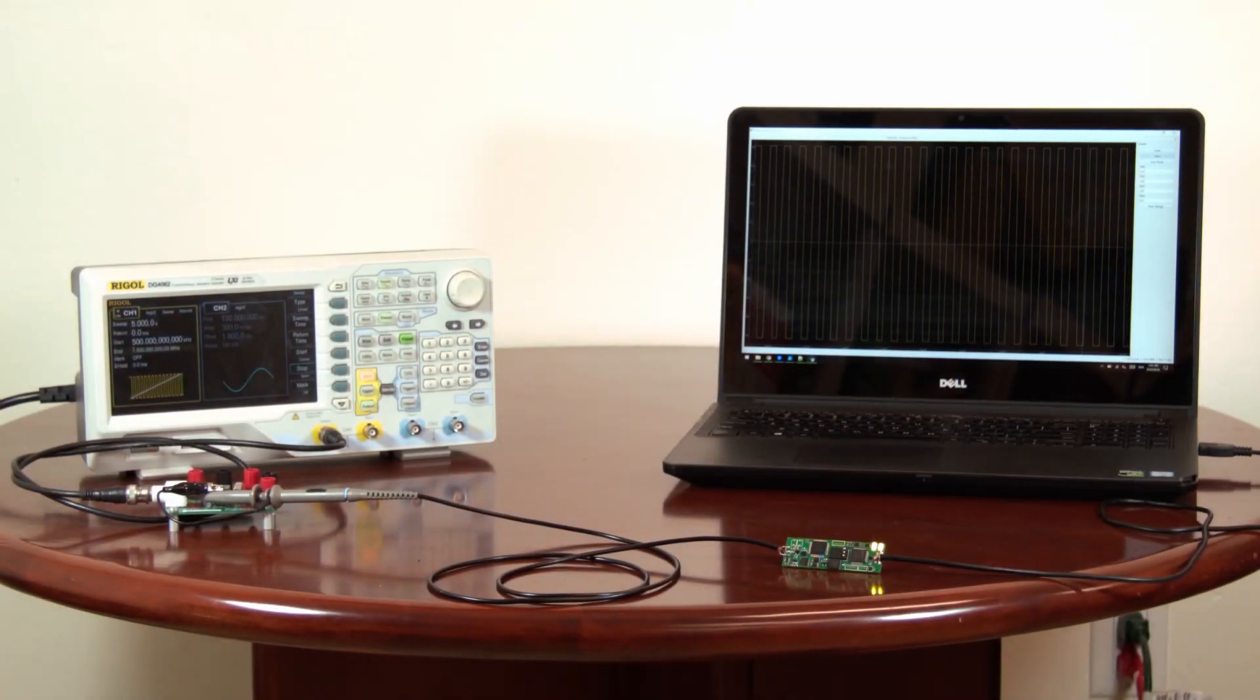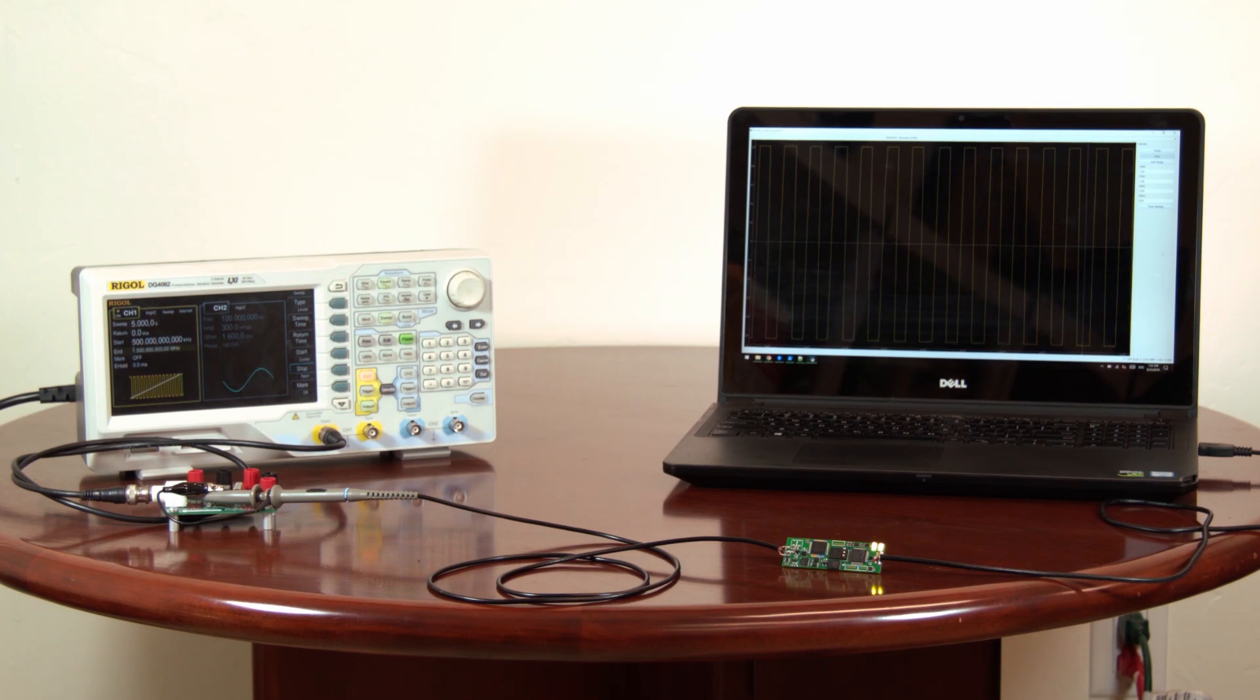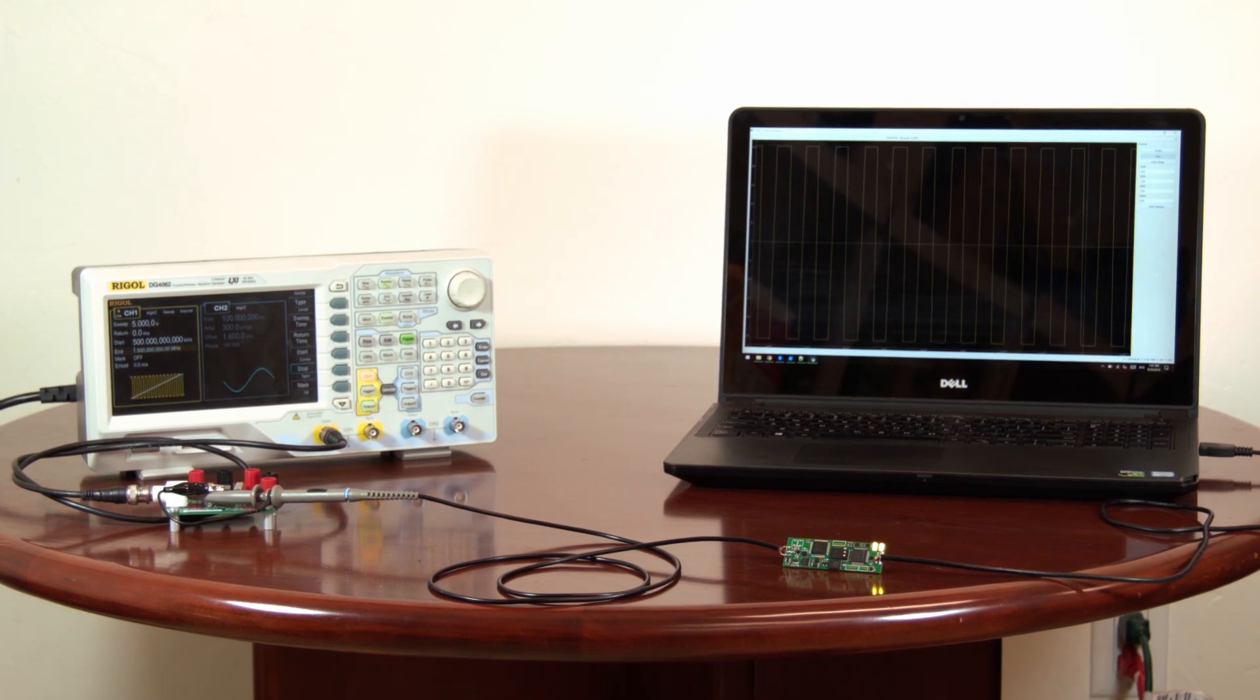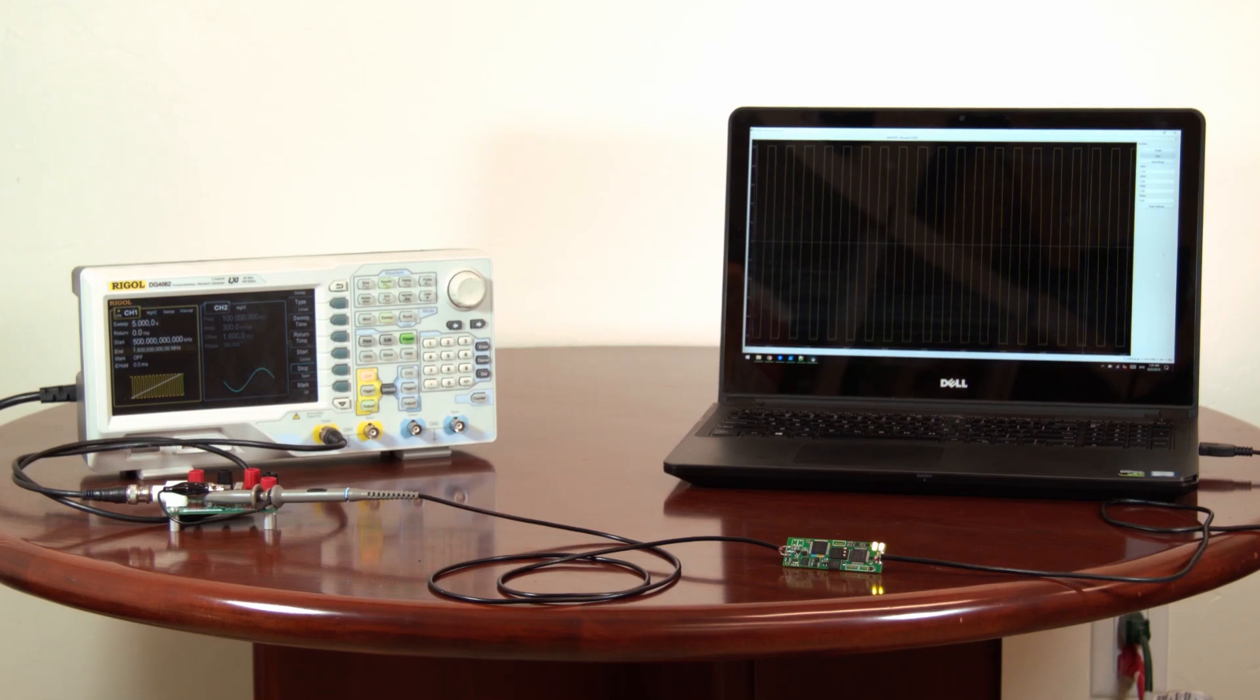The Probescope is a totally self-contained USB oscilloscope. It's completely open-source, with the hardware available under the CERN OHL and the software under various open-source licenses.